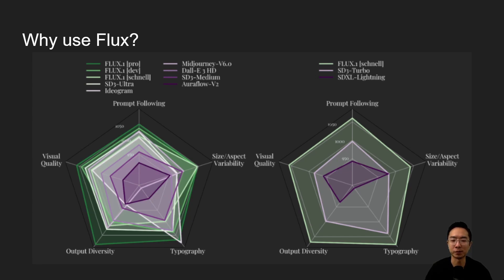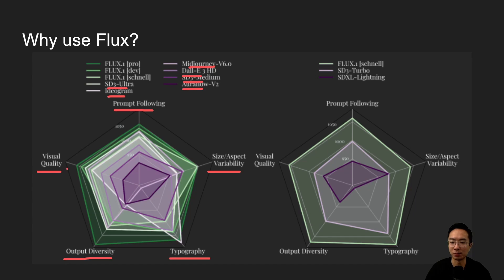So why use Flux? Here you can see diagrams showing different performance metrics comparing Flux with other models such as Midjourney, DALL-E, SD3 Medium, Aura Flow v2, Ideogram, SD3 Ultra, and the Flux Pro, Dev, and Schnell variants. The metrics include prompt following, size and aspect variability, typography, output diversity, and visual quality. Flux tends to outperform the others — shown in green — across all of these characteristics.